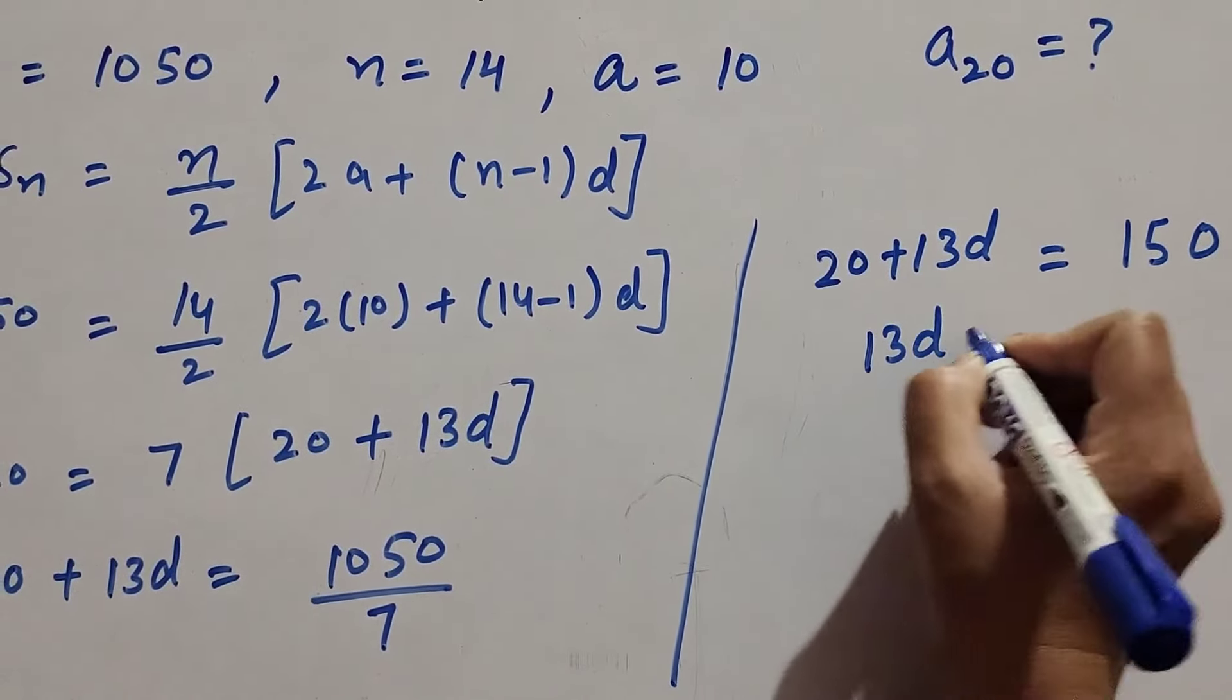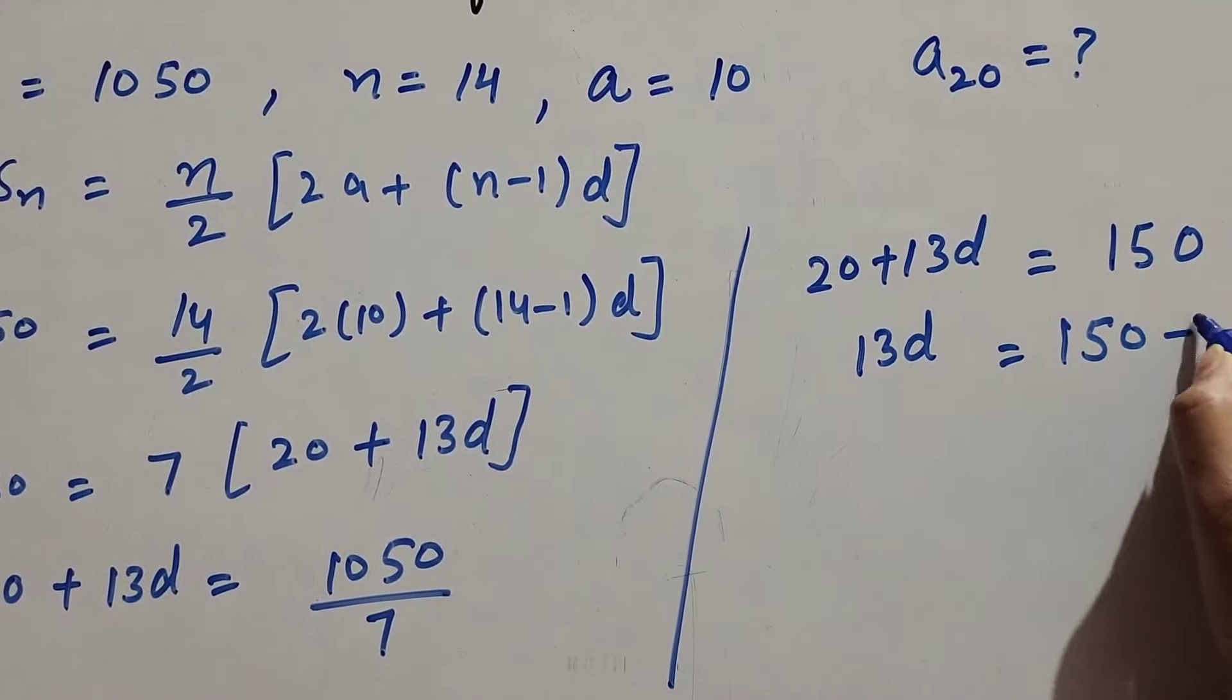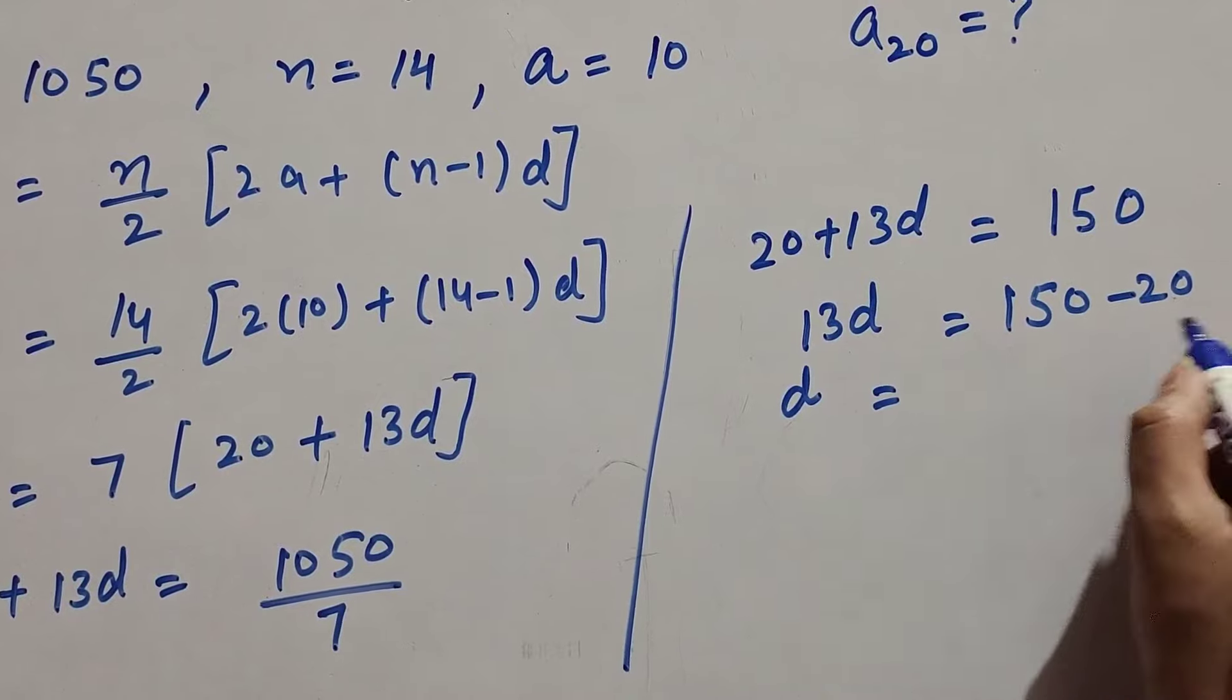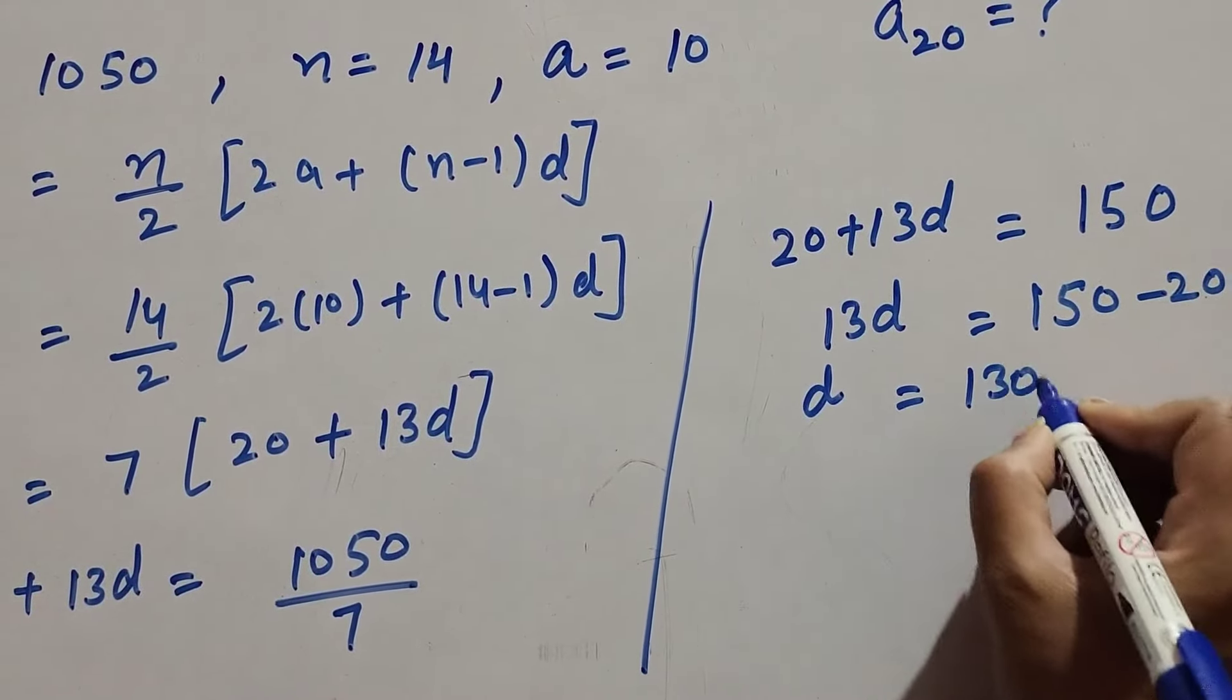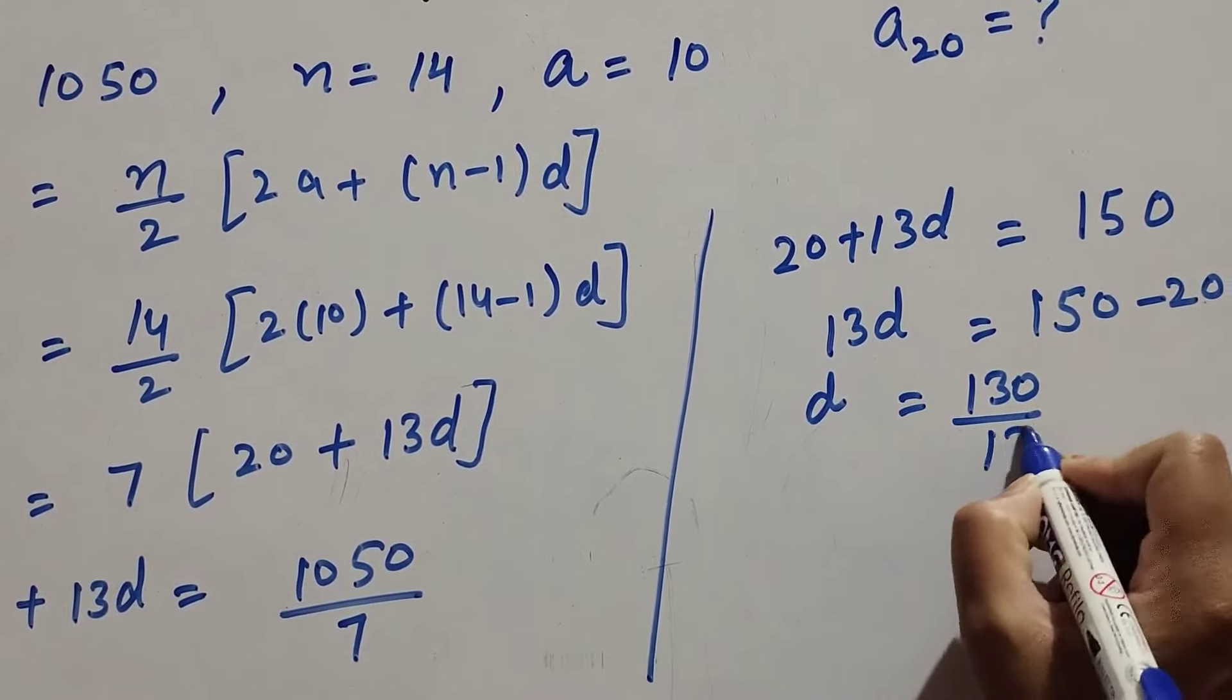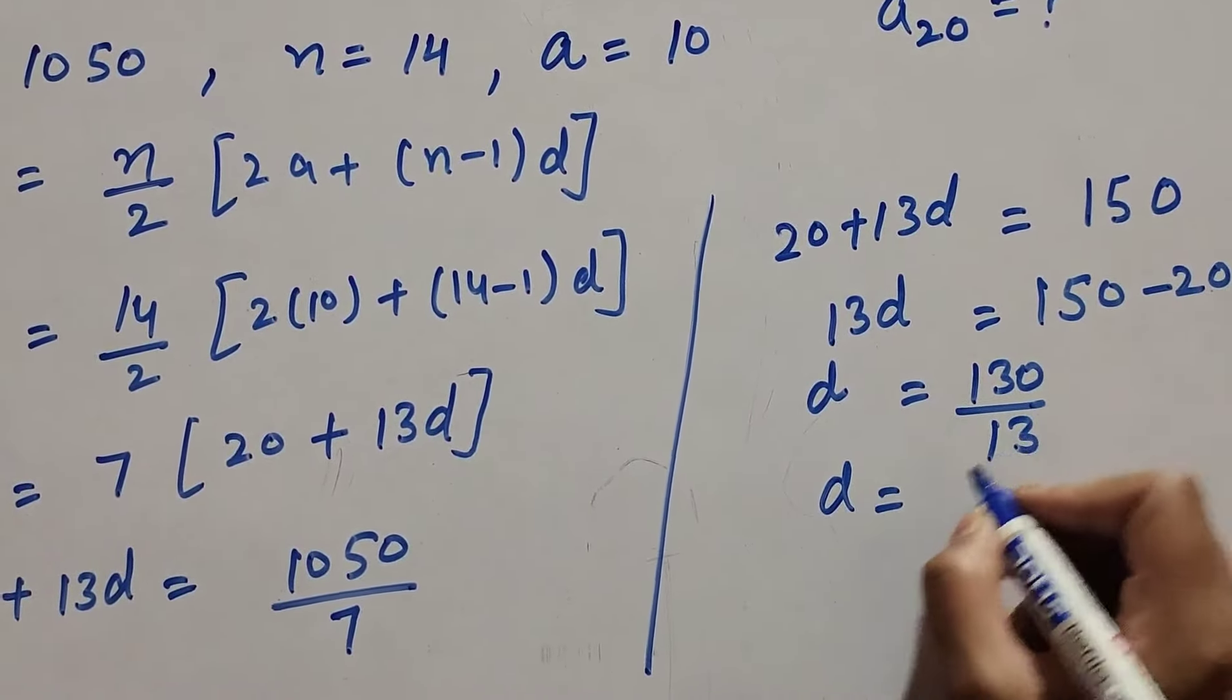So 13d equals 150 minus 20, transposing 20 to right hand side. 150 minus 20 equals 130. There is 13d, 13 transposing to right hand side so it divides. So d equals 130 divided by 13, which equals 10.